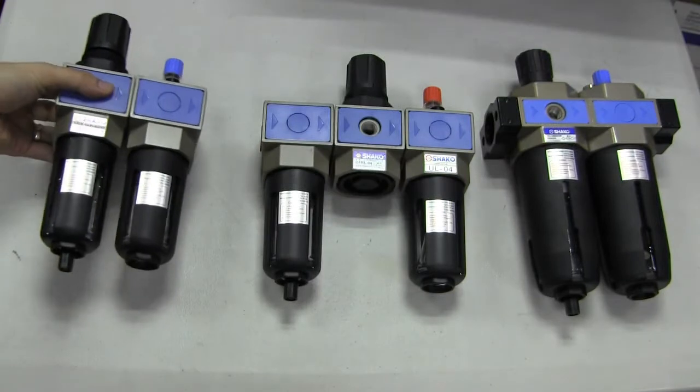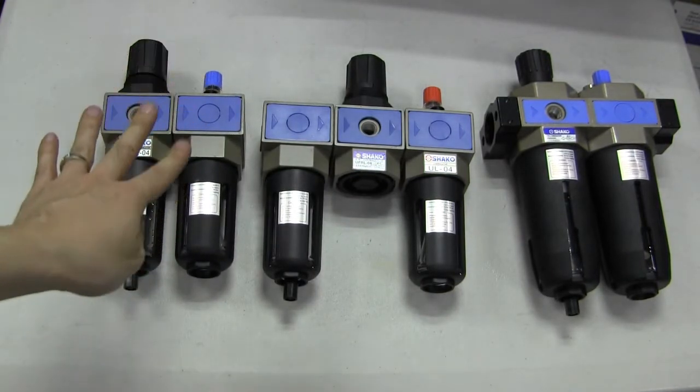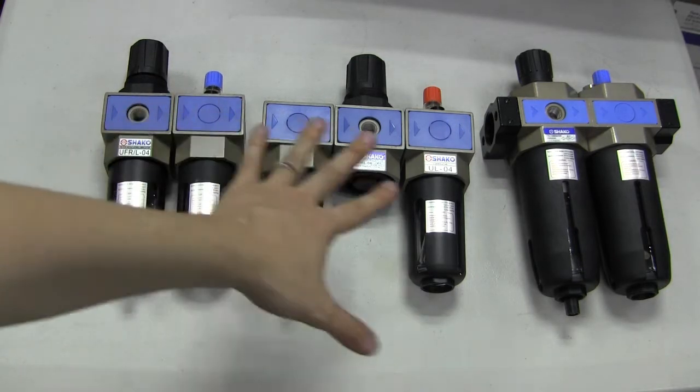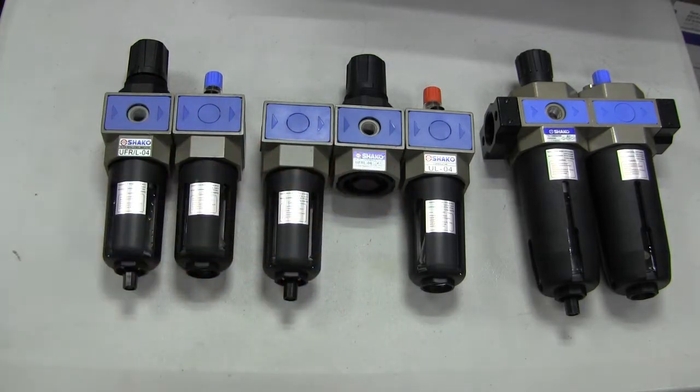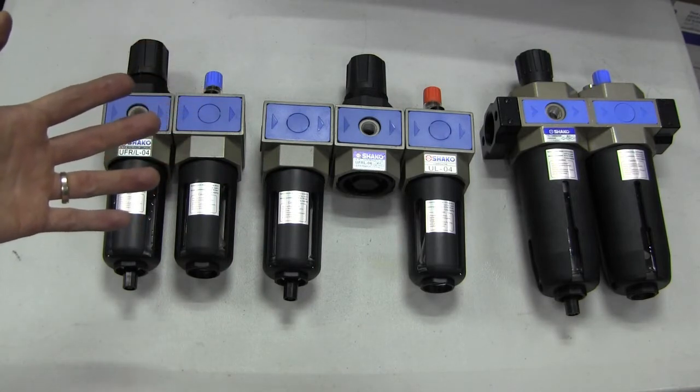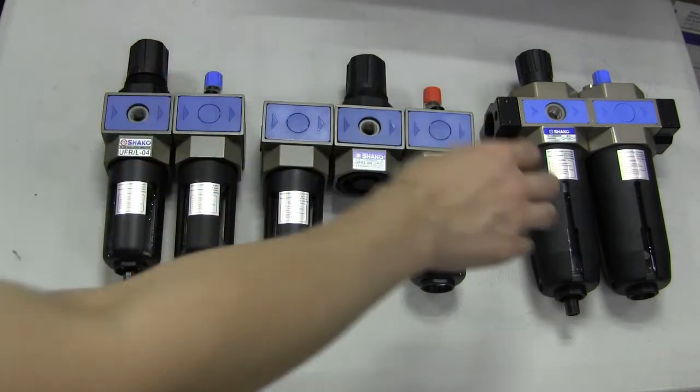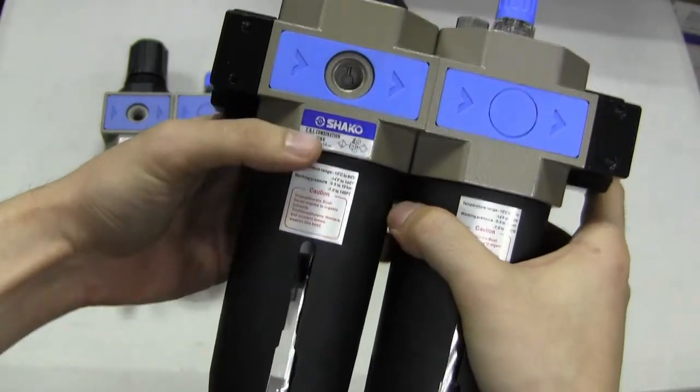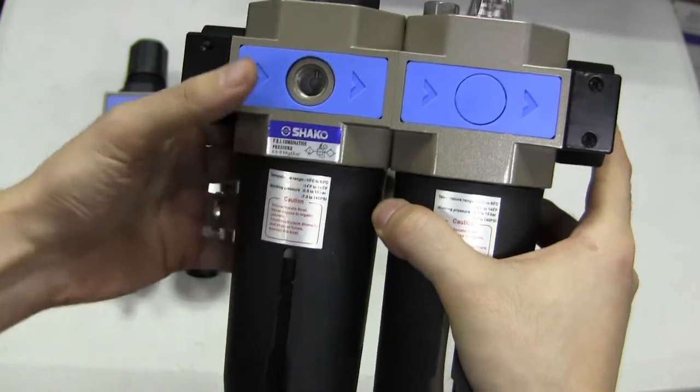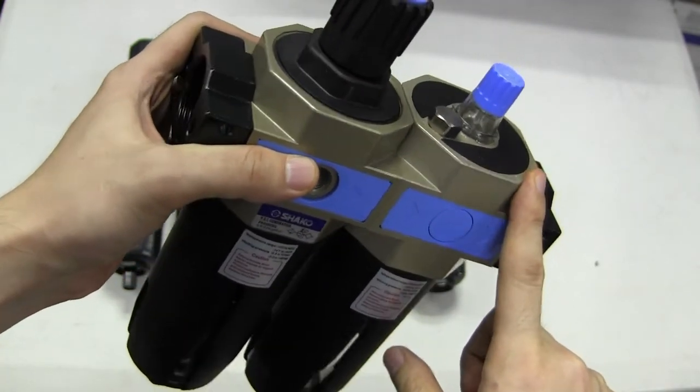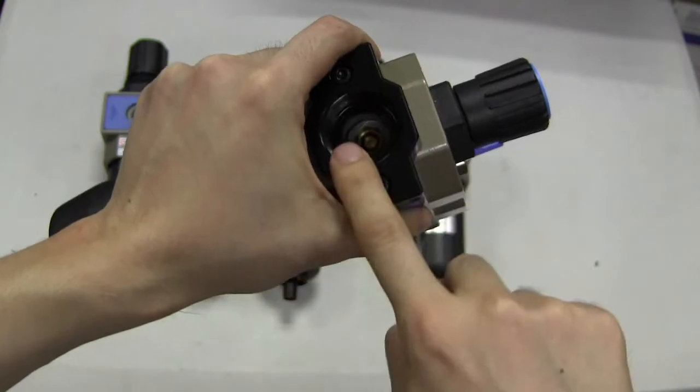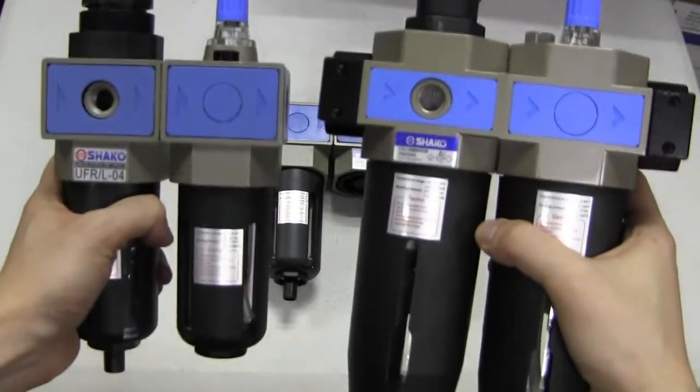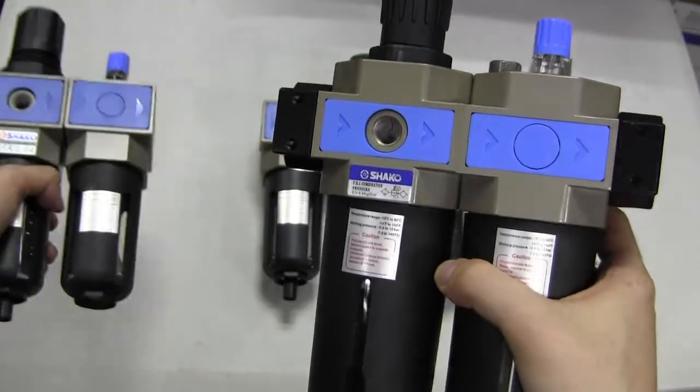For 1438 and one-half, the body is just the same for these two models. But if you want a bigger size - three-fourth or one inch - this is the model that we're going to use. So it's just the same, UFR/L. This is for 06 and 08, which is three-fourth and one inch port size. So you can see here the difference is it's a bigger body for bigger flow.